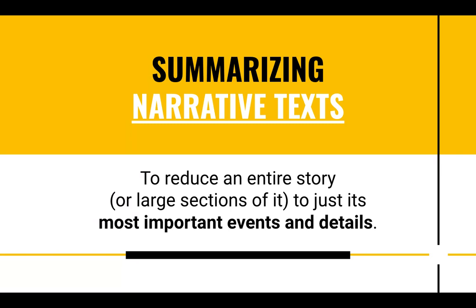So first, let's talk about what summarizing narrative text means. This is when you reduce an entire story or large sections of it to just its most important events and details. Sometimes you're going to need to summarize the entire text, and sometimes it might ask you to just summarize paragraphs 5 through 8 or pages 2 to 7. Remember that a summary means it's going to be shorter — much shorter than the entire text — because you're just putting the most important events and details.